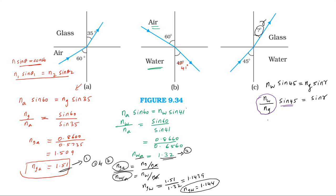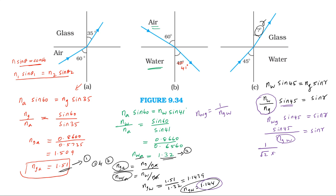Refractive index of water with respect to glass into sin 45 equals sin r. The refractive index of water with respect to glass equals 1 divided by the refractive index of glass with respect to water, which equals 1 divided by 1.144. Computing: sin r equals 0.6181. Therefore, r equals sin inverse of 0.6181, giving r approximately equal to 38 degrees.